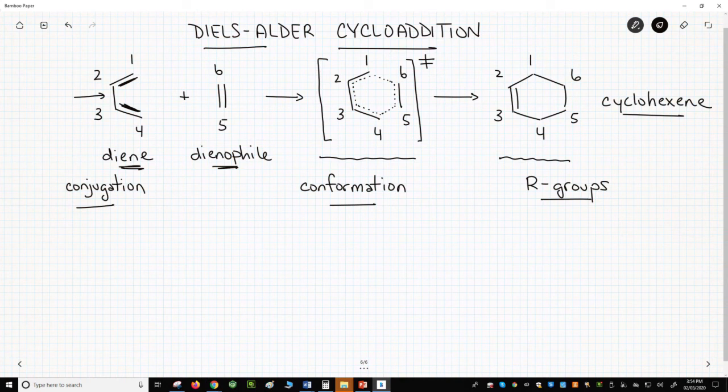Let's add some more details. First, the diene. Remember that the diene must be conjugated. This is a conjugated diene. Two pi bonds separated by a single bond. This is also a conjugated diene.